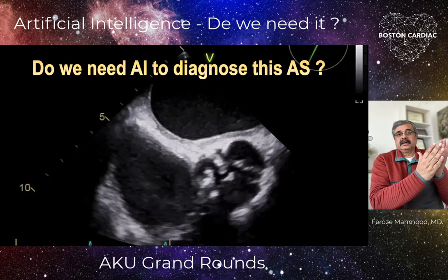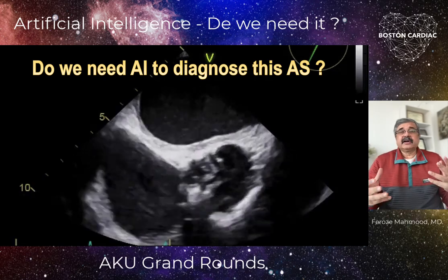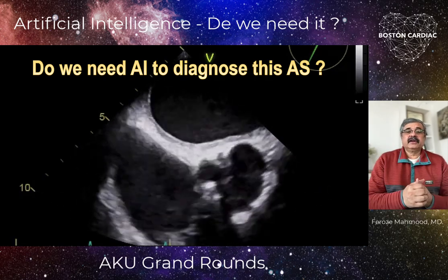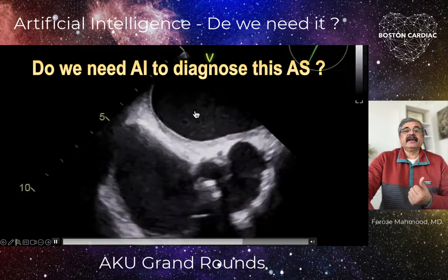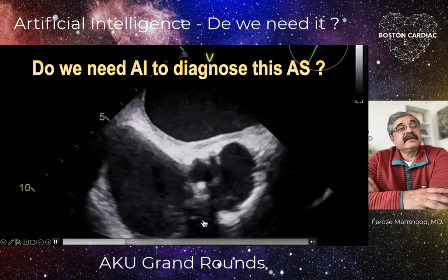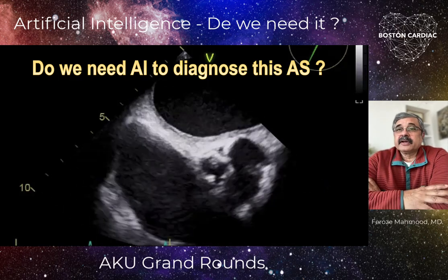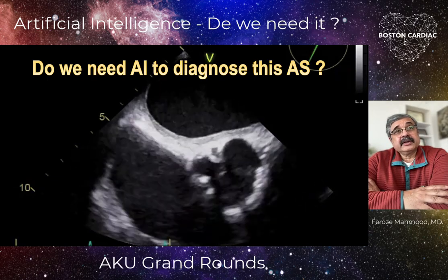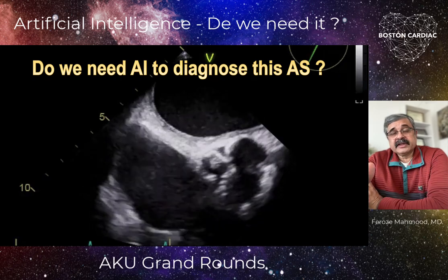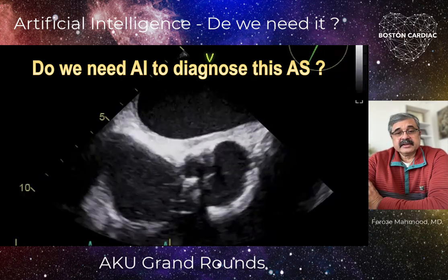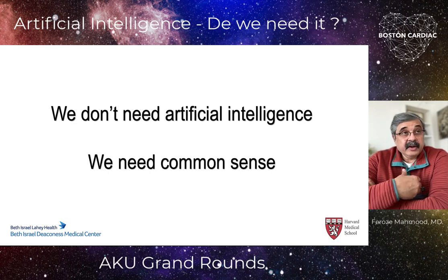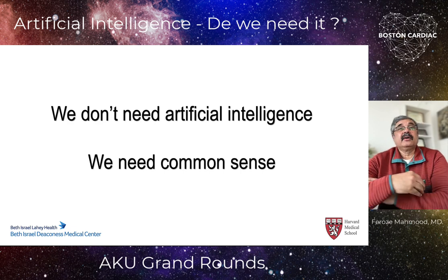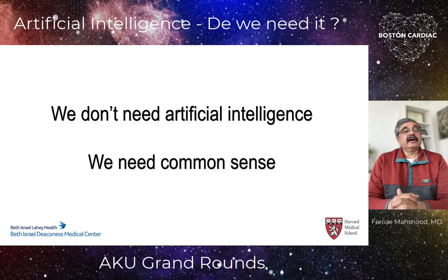Now, specifically coming to medicine: this is a mid-esophageal long-axis view of an aortic valve. You can see three leaflets barely moving — this is significant aortic stenosis. Do you need a billion-dollar computer to tell you this is aortic stenosis? Do we really need artificial intelligence for this, or do we need common sense? My personal bias is that we do not need artificial intelligence in medicine — we need some serious common sense.